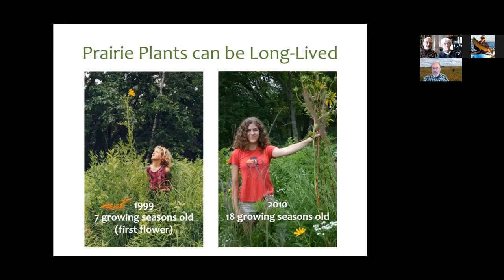As a result of all this disturbance and fire dependency, prairie plants have a number of important characteristics. One is that even though they're mostly flowers and grasses, they can be extraordinarily long-lived. The compass plant is kind of the iconic plant of the prairie — one was planted in 1992 on the Foxglove Savanna near Sauk City, Wisconsin, and the girl Anna Barzin, born in 1999 when this compass plant was actually planted, was seven years old when it first flowered.